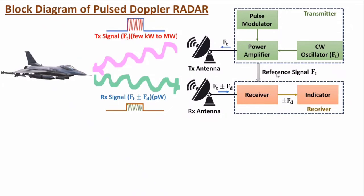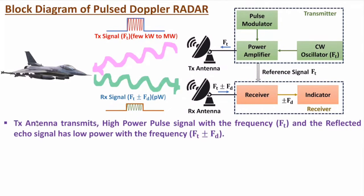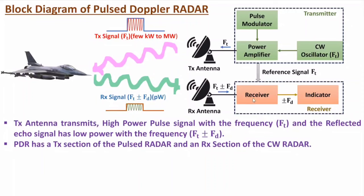With the receiver, we have a reference signal from the transmitter which has frequency ft. In the receiver, we have a mixer that will separate this frequency — it will eliminate the ft component, and here we will have the Doppler frequency. Based on the Doppler frequency, we can identify the motion of the target — that is, the velocity of this target. So the transmitting antenna transmits a high power pulse with frequency ft, and the reflected signal has very low power in terms of picovolts with frequency ft ± fd. This deviation in frequency identifies the relative velocity.